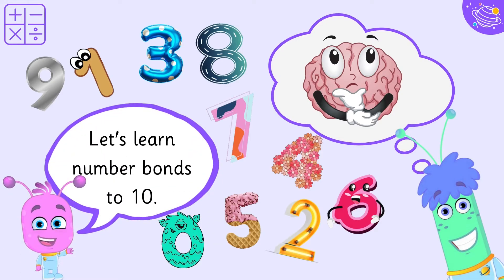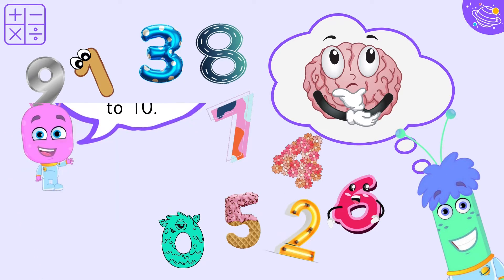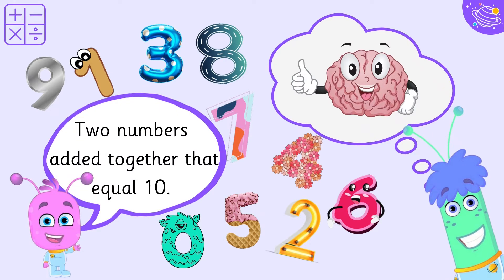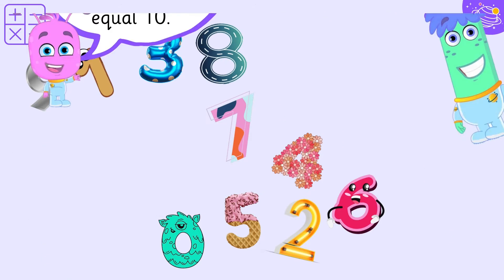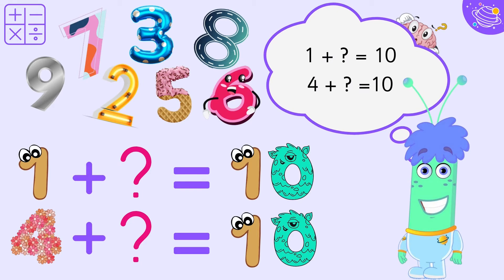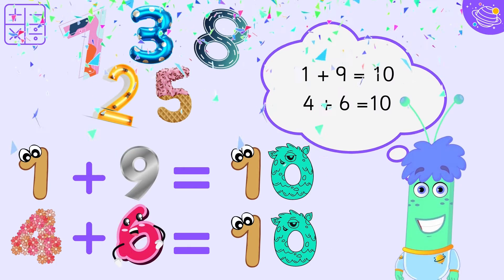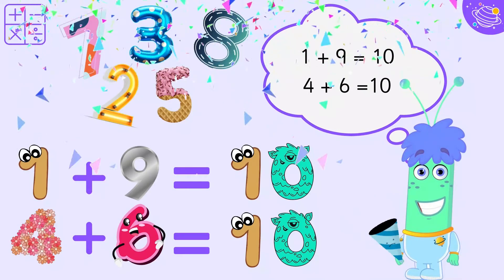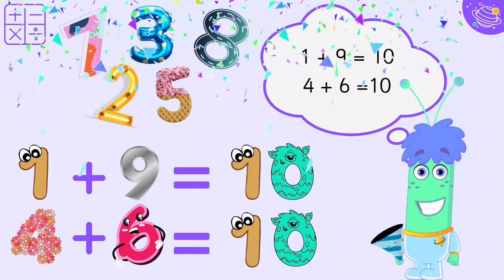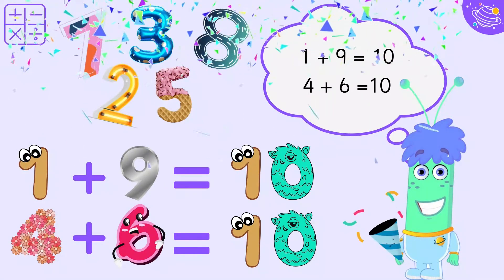Let's learn number bonds to ten — two numbers added together that equal ten. One plus question mark equals ten. Four plus question mark equals ten. One plus nine equals ten. Four plus six equals ten.